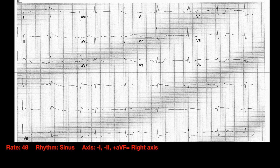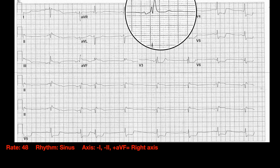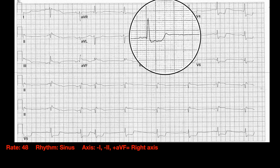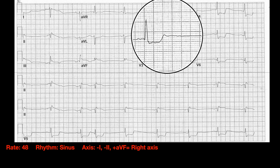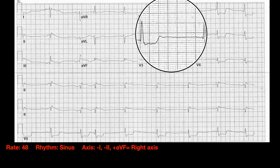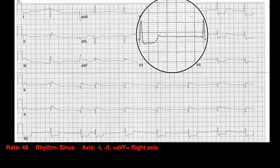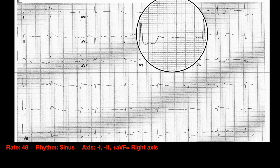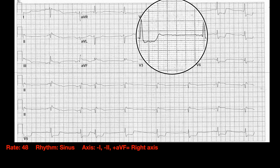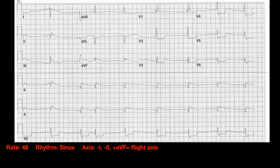I also always lump the QT interval in with my intervals assessment. The T wave looks like it ends right there. Grossly — we could get the computer to do it — but does the T wave finish up before you get halfway between the R waves? It looks like it does. The T wave kind of finishes here, and the midway point between these beats looks like it's somewhere around here. So this looks like a grossly normal QT interval.